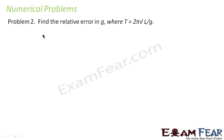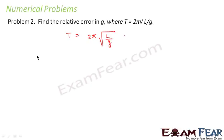Problem 2: Find the relative error in G, where T equals 2π√(L/G) — the expression for the time period of a simple pendulum. To find the relative error in G, we first write the expression in terms of G. Squaring both sides gives T² equals 4π²L/G, so G equals 4π²L/T².